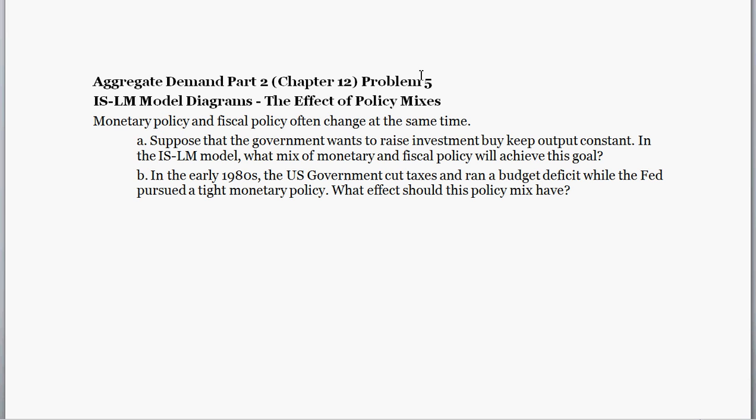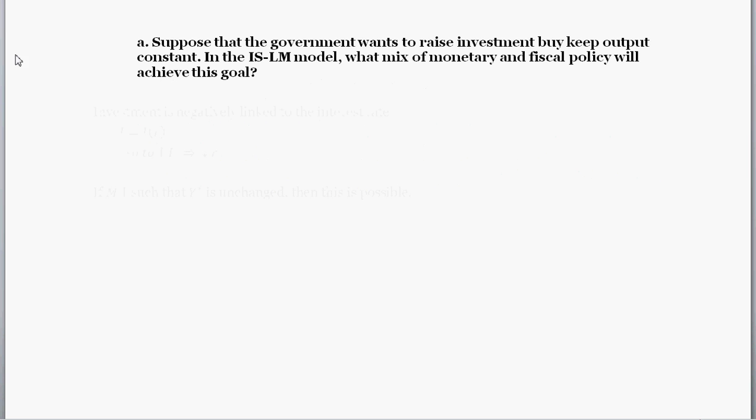So getting started, what's the first question here? The question asks, suppose that the government wants to raise investment but keep output constant. In the IS-LM model, what mix of monetary and fiscal policy will achieve this goal?